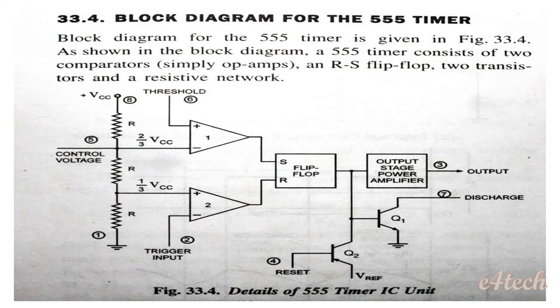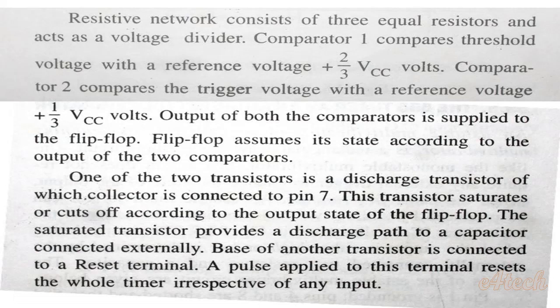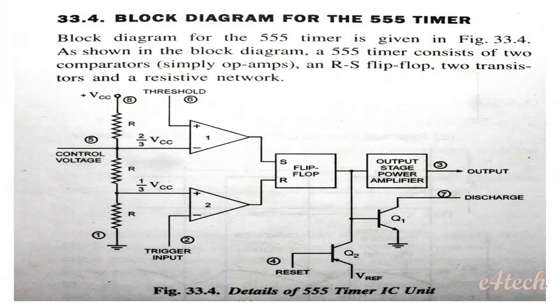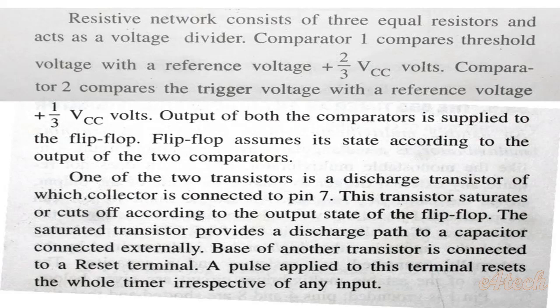The resistive network is connected to VCC and acts as a voltage divider. Since the three resistors are equal, VCC is divided into three equal parts, giving reference points of 1/3 VCC and 2/3 VCC. Comparator 1 compares the threshold voltage with the reference voltage of 2/3 VCC. Comparator 2 compares the trigger voltage with the reference voltage of 1/3 VCC.